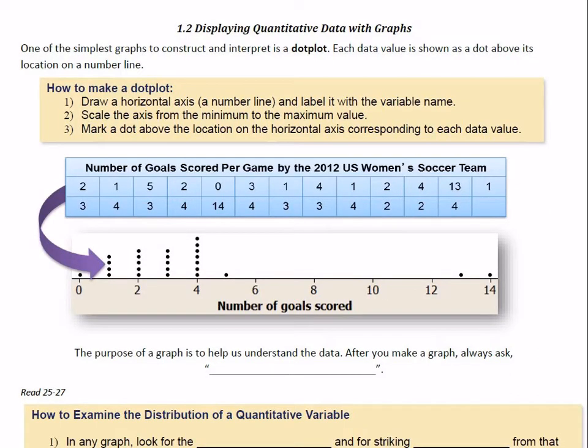Displaying quantitative data with graphs. Thankfully, all of our classes pretty much become familiar with dot plots. This is an example of the goals scored for the 2012 U.S. women's soccer team. For this graph, each one of the dots represents a game, and that's how many goals they scored in that game. Looks like, unless the arrow was covering something up, they only got shut out once. They're a pretty good soccer team.